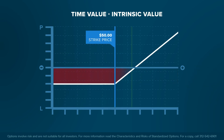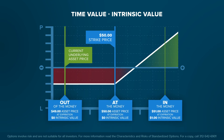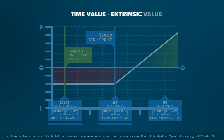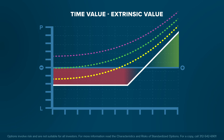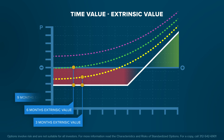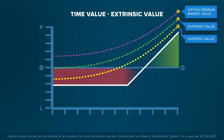An option expiring today would be worth the amount by which it is in the money. If it is at the money or out of the money, then it has no current intrinsic value. An option that has time before expiration generally has extrinsic value. The extrinsic value represents the probability that an option's underlying asset value will move in the future, giving it the potential to produce an increase in intrinsic value. The more time until expiration, the greater the probability that an underlying asset's move will increase an option's intrinsic value. Therefore, for both puts and calls, the greater the time until expiration, the greater the extrinsic value.